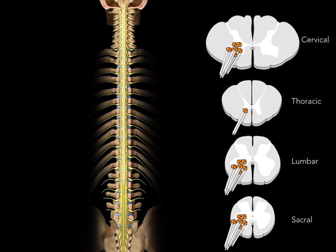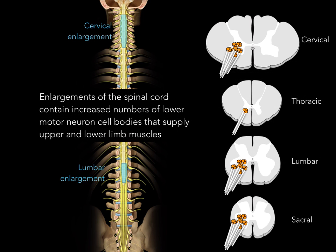Looking at the spinal cord within the vertebral column in a coronal section, with cross-sections on the right: at the cervical levels, between C5 and T1 spinal cord levels, the large lollyheads create a cervical enlargement. At the lumbar and sacral ventral horn, they form another enlargement called the lumbar enlargement, located in the lumbar vertebral region. It is the lumbar and sacral spinal cord that are enlarged, but because the conus medullaris ends between L1 and L2, the swelling occurs in that lumbar vertebral region. Therefore, enlargements of the spinal cord contain an increased number of lower motor neuron cell bodies — supplying upper limb muscles for the cervical enlargement and lower limb muscles for the lumbar enlargement.